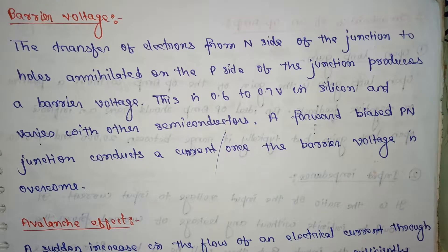Next definition: what is barrier voltage? The transfer of electrons from inside of the junction to holes annihilated on the p side of the junction produces a barrier voltage. This is 0.6 to 0.7 voltage in silicon and varies with other semiconductors.